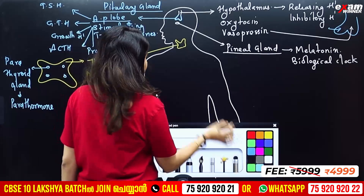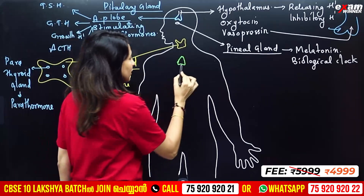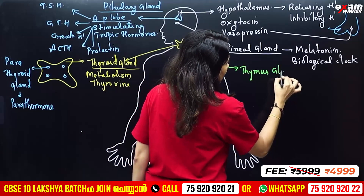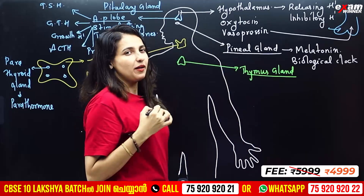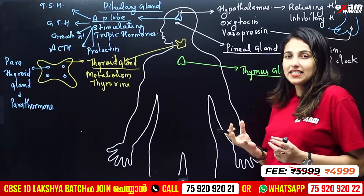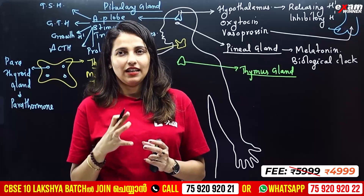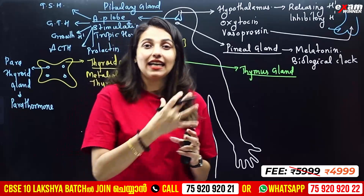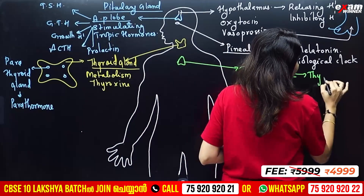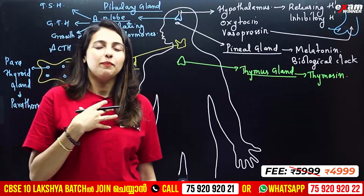We have a thymus gland located near the skull. The thymus gland is involved in the maturation of T lymphocytes (white blood cells). The hormone it secretes is thymosin. The thymus gland is most active during early childhood.